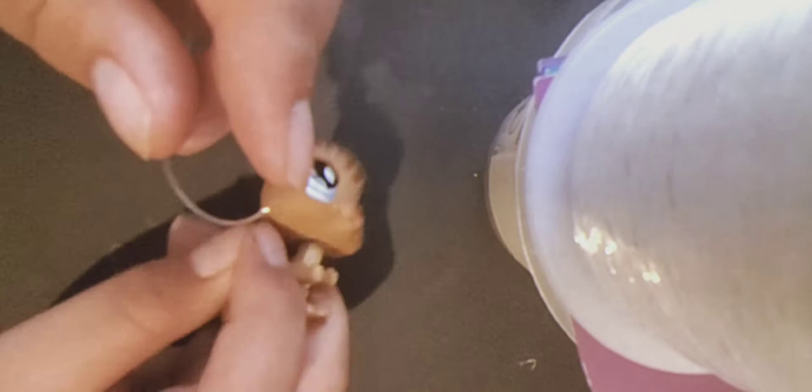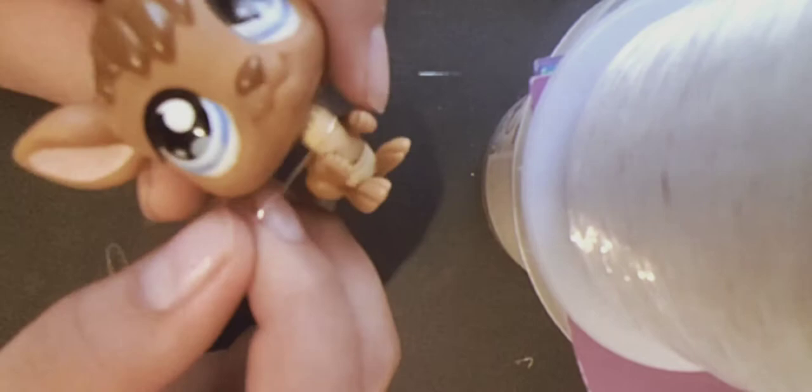So when you have your string ready, you want to put the two ends together so that you know where the middle is. Don't tie them, just so they're next to each other so you know this is the middle. And this is where you're gonna put your toy in. You're gonna wrap it around the toy.